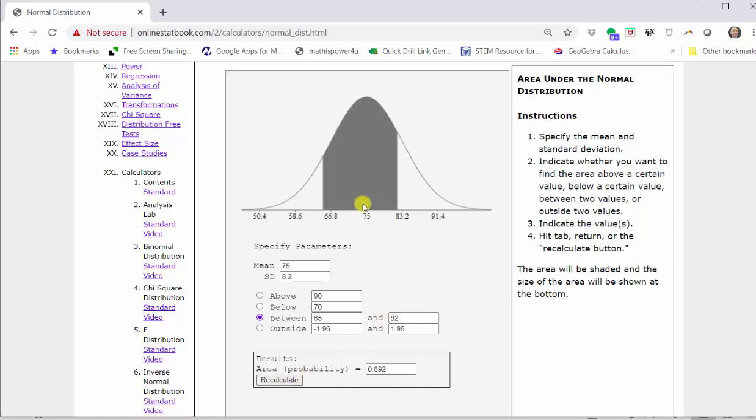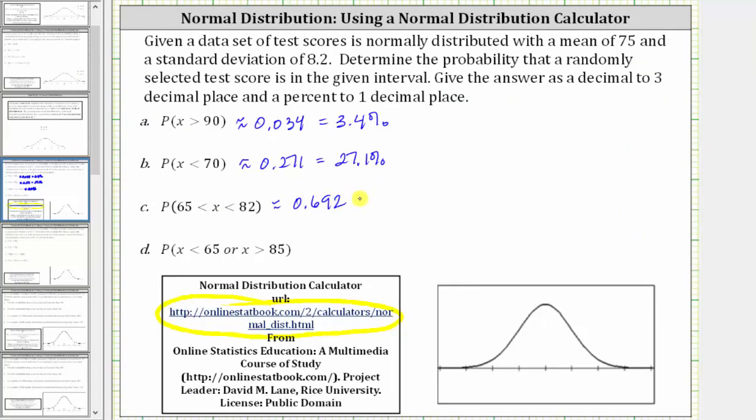Looking at the graph, notice how the area below the curve is shaded between the test scores of 65 and 82. This area represents the probability, which below is given as 0.692, which is equal to 69.2%.